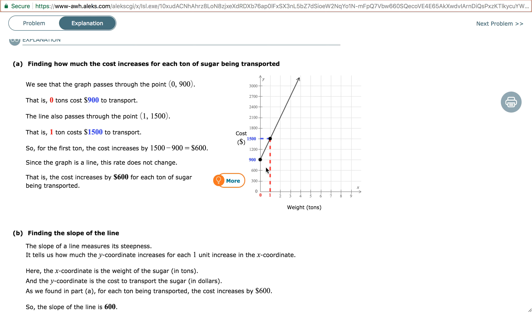And now, let's find the difference in tons. Between 0 and 1, the difference is 1 minus 0, which is 1. So the amount of dollars per ton would be 600 out of 1. In other words, 600 divided by 1, which is just $600 for each ton of sugar being transported.